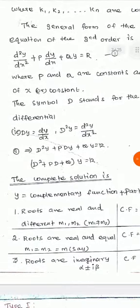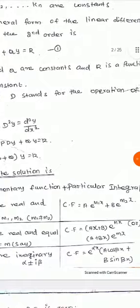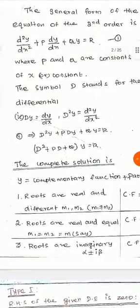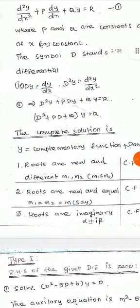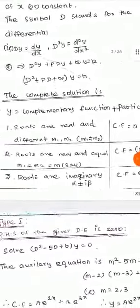The symbol D stands for the differential operator. We denote dy/dx = D·y, so d²y/dx² = D²·y, and so on. Using this notation, we write the equation as (D² + pD + q)y = r. The complete solution of this equation is y = complementary function + particular integral.